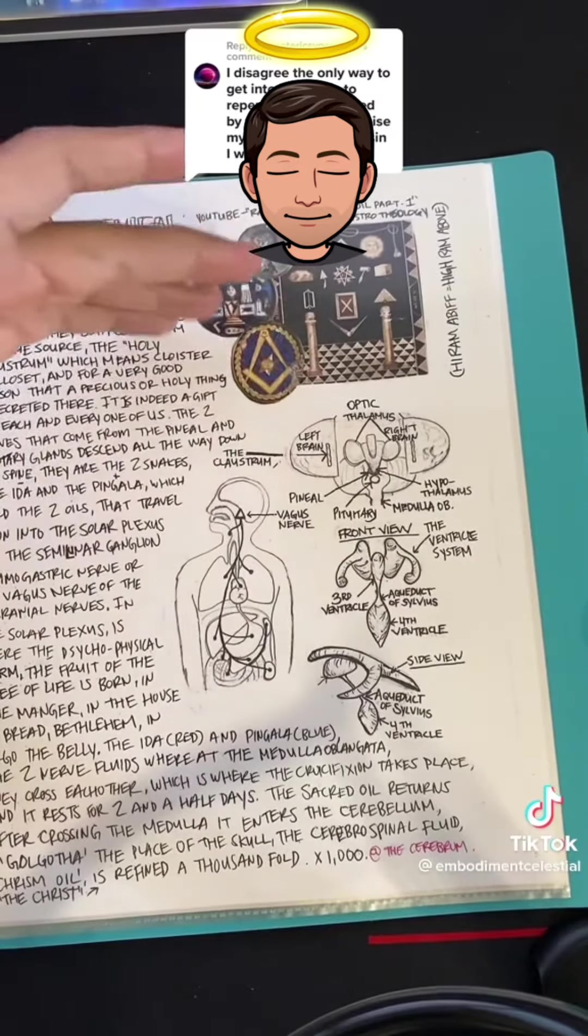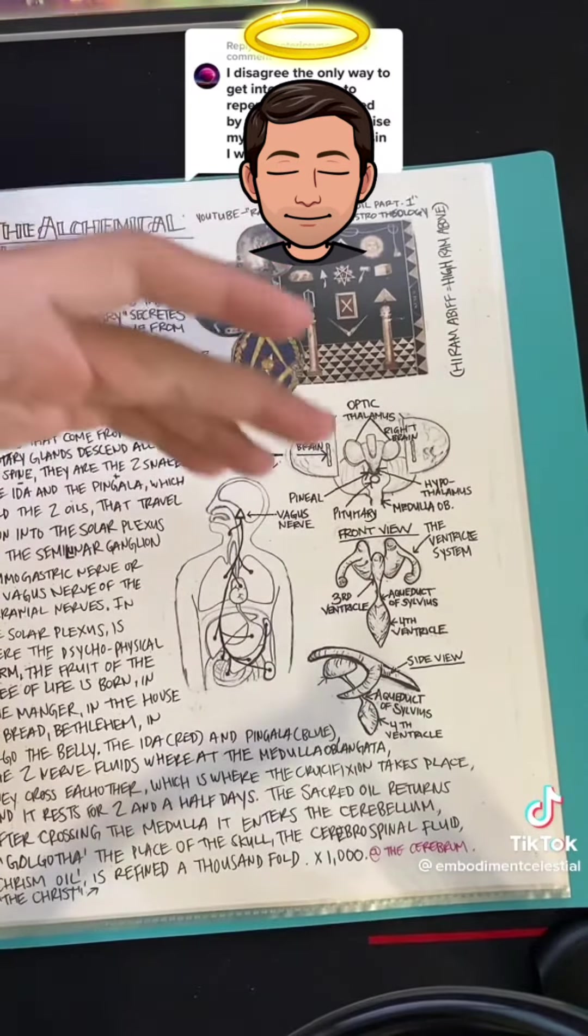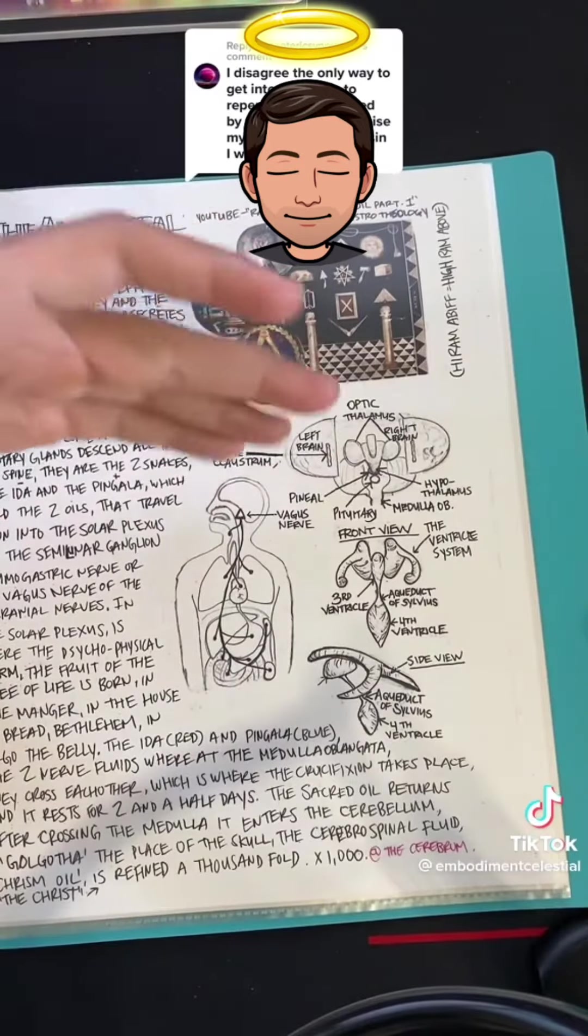Moses parting the Red Sea. He split the right hemisphere and the left hemisphere of his mind so he could walk the path that God intended for him.